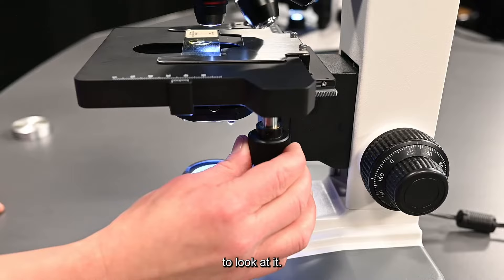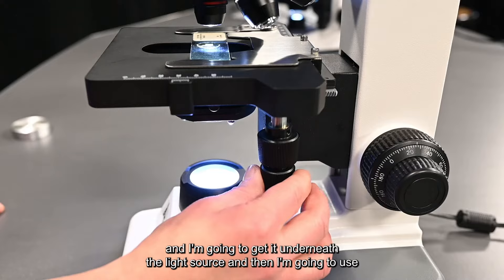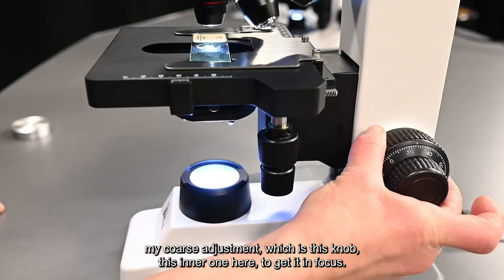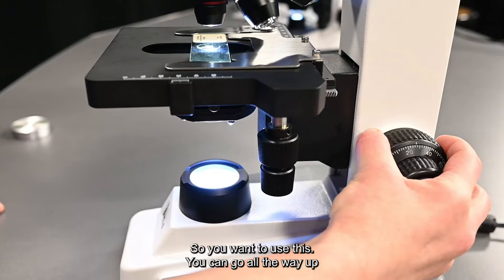Now that my slide is on the stage I need to get it in position to look at it. I'm going to use those knobs that we talked about earlier and I'm going to get it underneath the light source. Then I'm going to use my coarse adjustment which is this knob, this outer one here, to get it in focus.